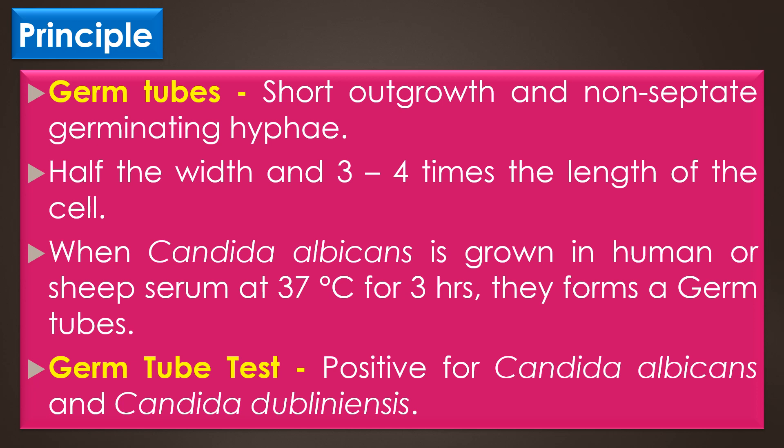Germ tubes are short outgrowths and non-septate germinating hyphae. They are half the width and three to four times the length of the cells from which they arise. When Candida albicans is grown in human or sheep's serum at 37 degrees Celsius for three hours, they form a germ tube which can be detected with wet films as filamentous outgrowth extending from the yeast cells.